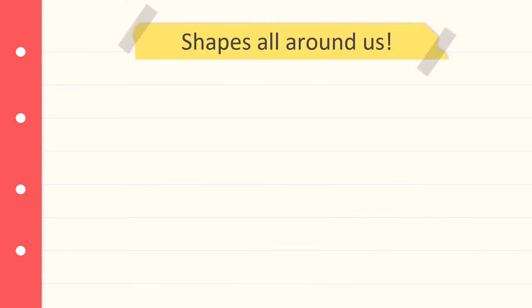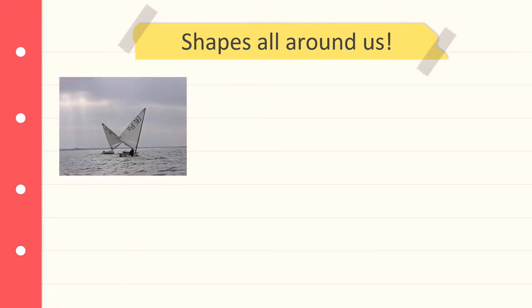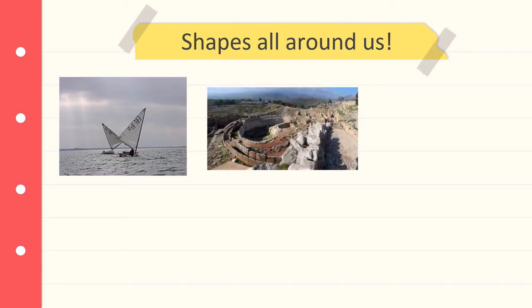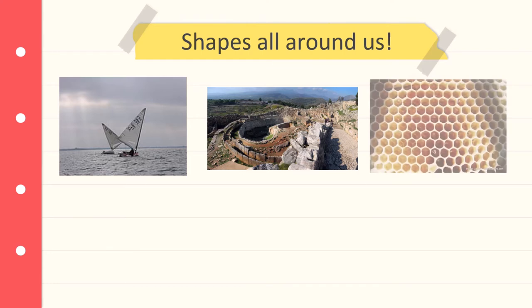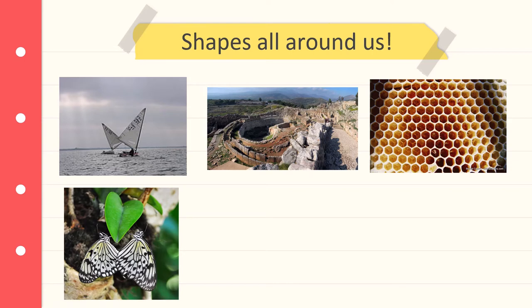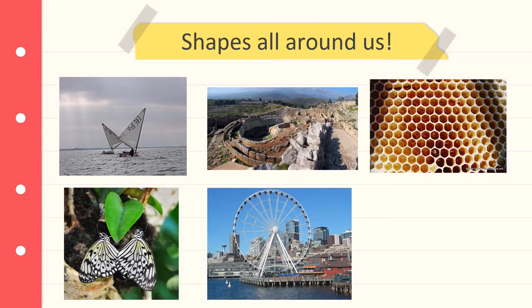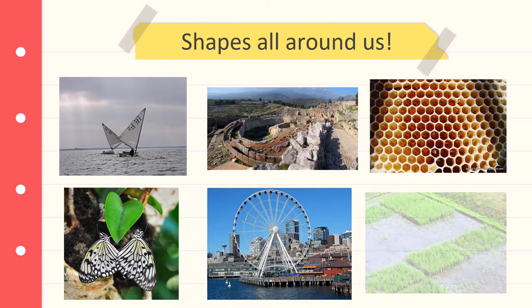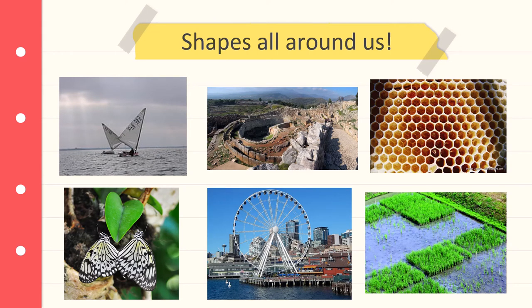Our world is full of shapes. Shapes can be found outside everywhere in nature. Things like animals and plants and rocks, they all have their own special shape. Shapes are also used by people, people who make things. Some shapes have special functions. That means jobs. They do things better than other shapes. Let's take a closer look at some shapes.